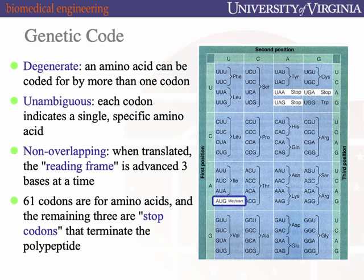There's one more codon that you do need to know, which is the start codon, AUG. All translated proteins start with methionine or a modified version of methionine. So translation starts with the start codon, and the start codon encodes methionine.